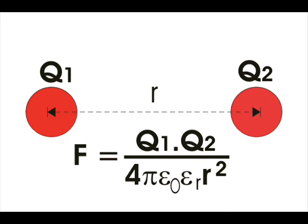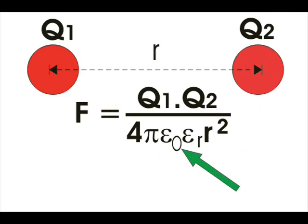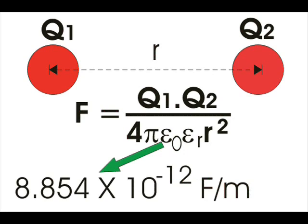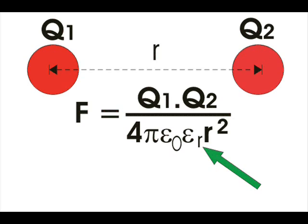The force acting between the charge is expressed as F equal to Q1 into Q2 divided by 4 pi epsilon 0 epsilon r into R square, where epsilon 0 is the permittivity of air or vacuum and its value is 8.854 into 10 to the power of minus 12 farads per meter. And epsilon r is the relative permittivity of the surrounding medium in respect to the permittivity of air or vacuum.